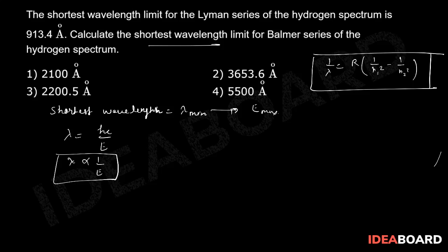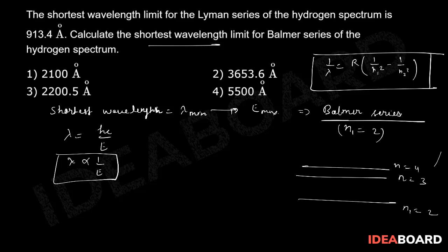So where we will get maximum energy transmission, then we will achieve lambda minimum. Now here in Balmer series, one thing we know that N1 is equal to 2, this is fixed. So suppose that this is N1 equals 2, then we have N equals 3, then we have N equals 4, and so on up to N tending to infinity.